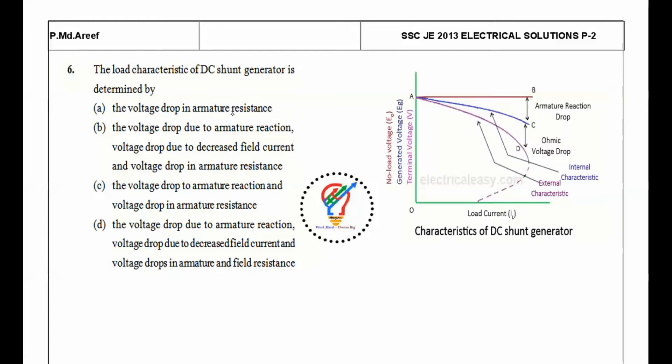The voltage drop in armature resistance, the voltage drop due to armature reaction, voltage drop due to decreased field current, and voltage drop in armature reaction. The voltage drop due to armature reaction, voltage drop due to decreased field current, and voltage drop in armature and field resistances.